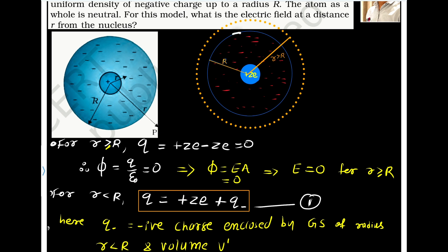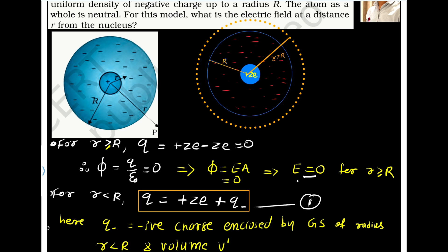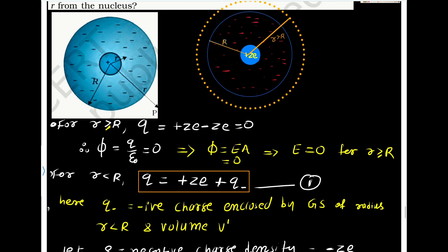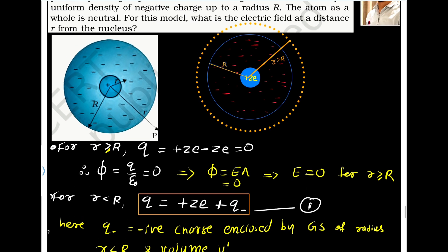Similarly, if I assume a point exactly on the surface, in that case also the charge enclosed is 0, so the electric field will again be 0. So for any point r greater than or equal to R, the electric field is 0 for the given system. Now for a point which is located somewhere inside the sphere.